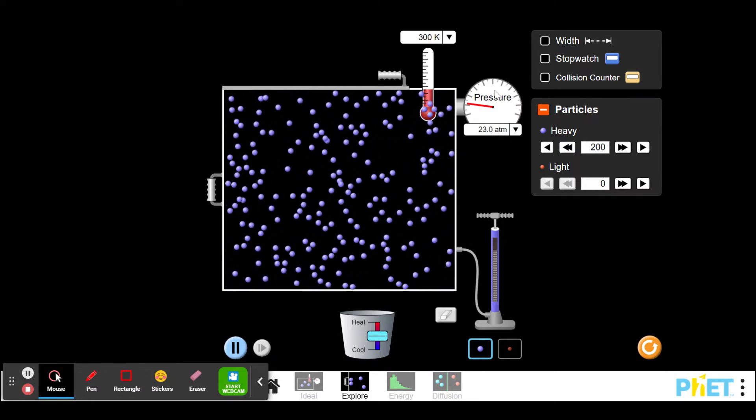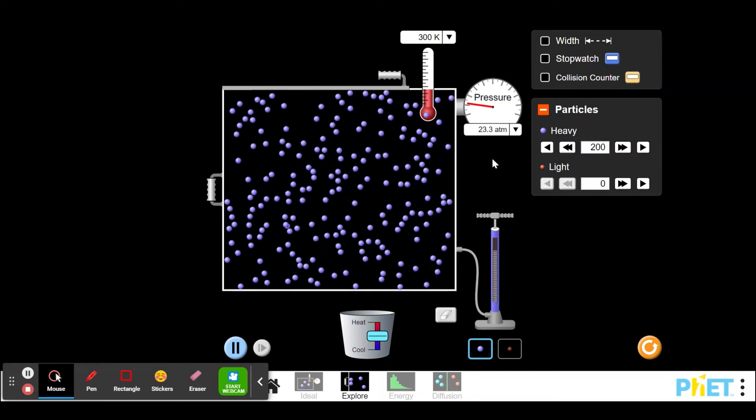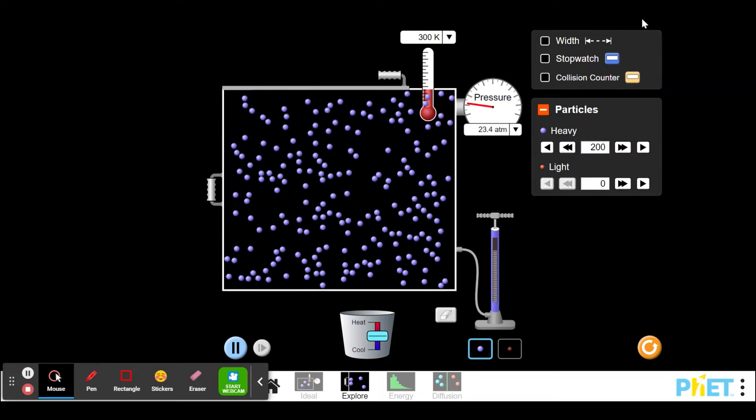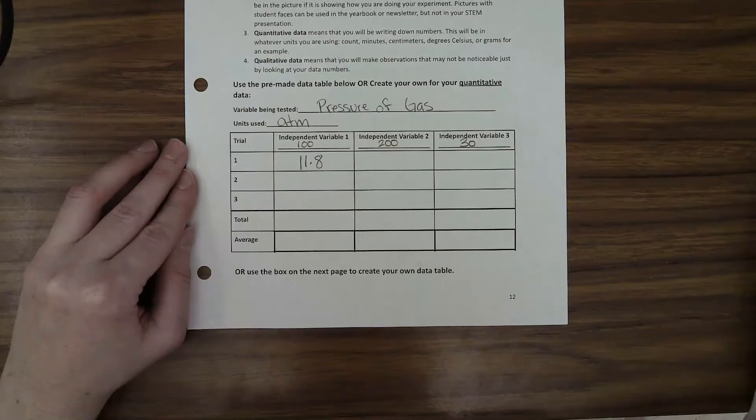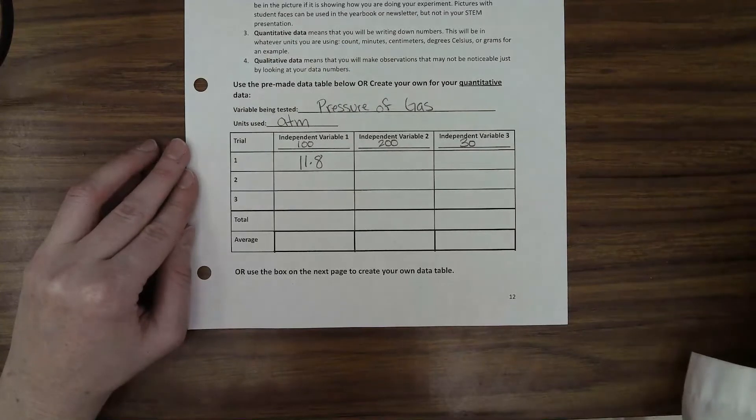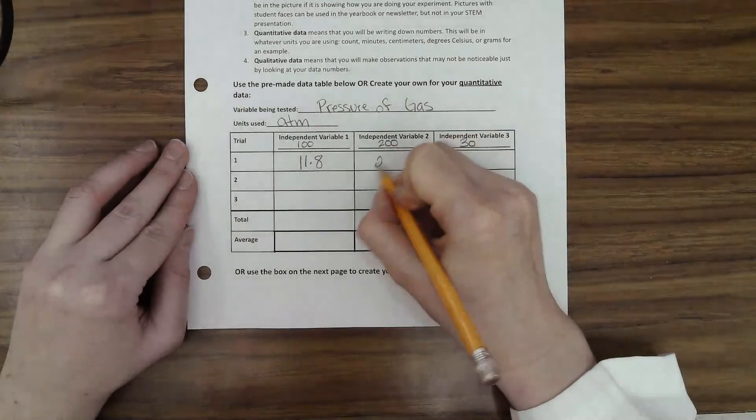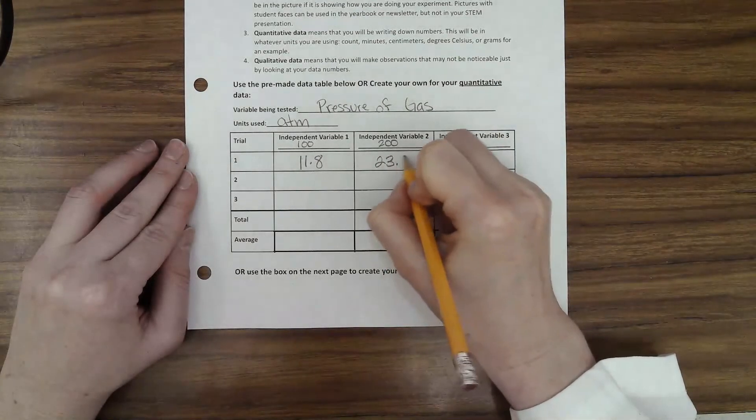So I'm going to call it 23.5 and I'm going to write down 23.5 with 200 particles. Then I'm going to add 100 more particles and let that give it a minute to become equal and then see my pressure.